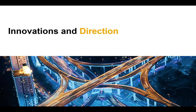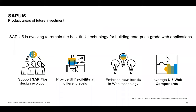Now let's look into the main innovations and directions where UI5 is going. There are four areas: first, SAP Fiori design evolution; second, UI5 Flexibility — how SAP, partners, or customers can adapt screens efficiently; third, new trends in web technology, because with UI5 we don't want to stick to completely proprietary technologies but want to leverage what's happening in web development outside SAP; and fourth, the UI5 Web Components.